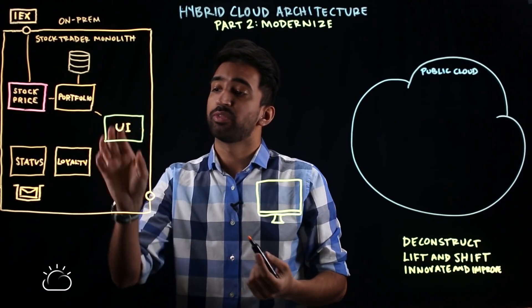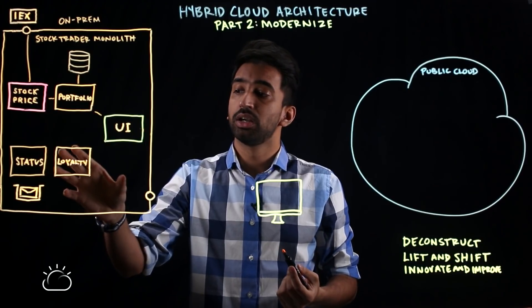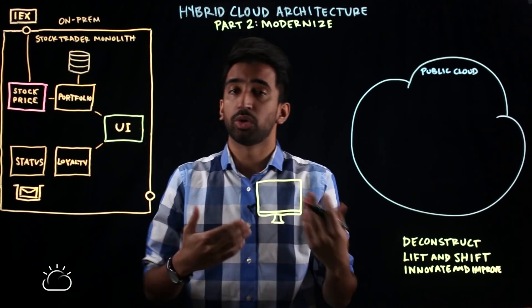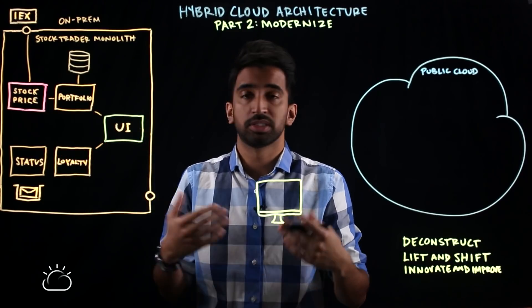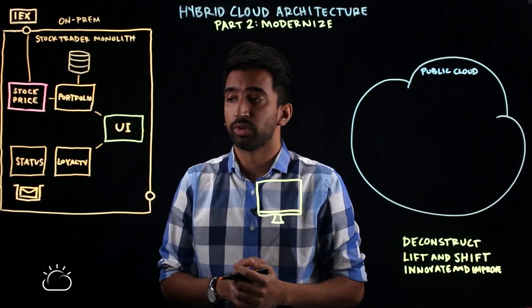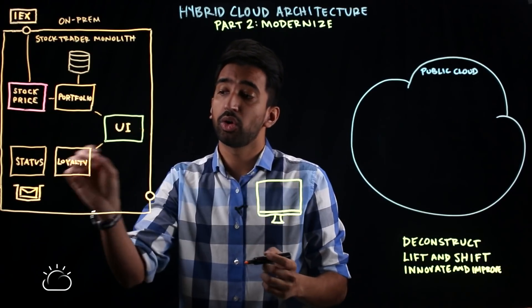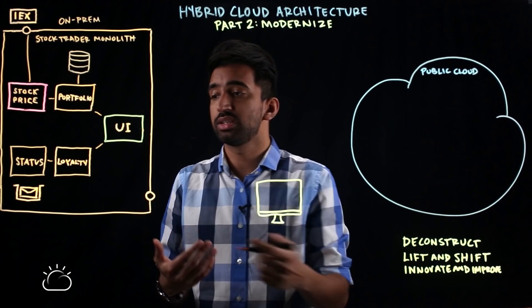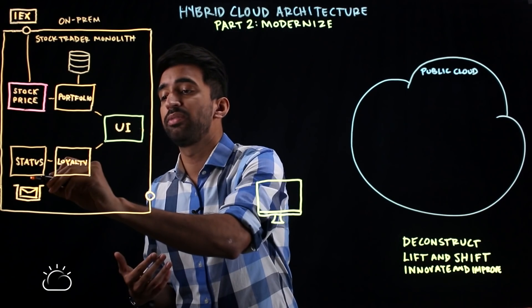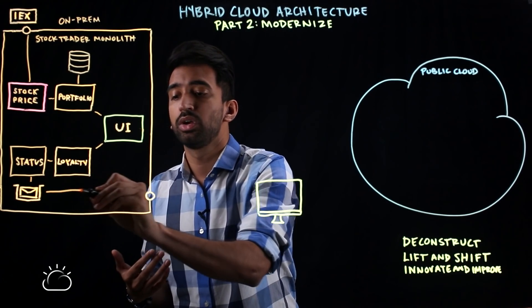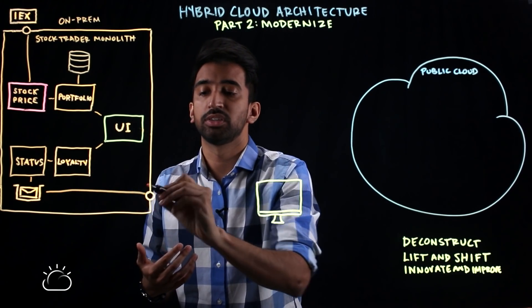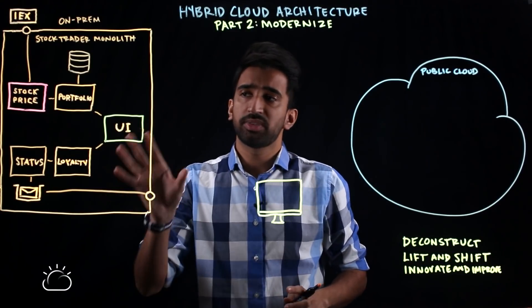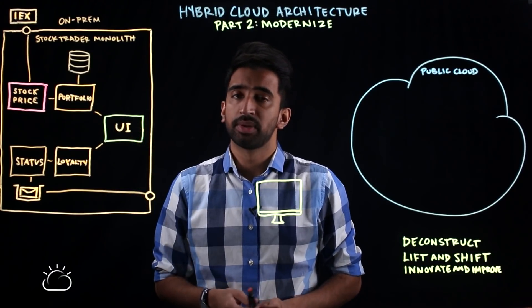We've also got a couple of other services. There's the loyalty service which keeps track of loyalty with specific stocks in your portfolio, and then notifies users on that loyalty whenever it changes by taking advantage of a message queue service which notifies the user through something like email. That's a very simple overview of the architecture.